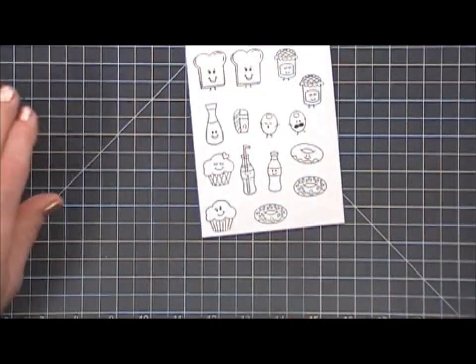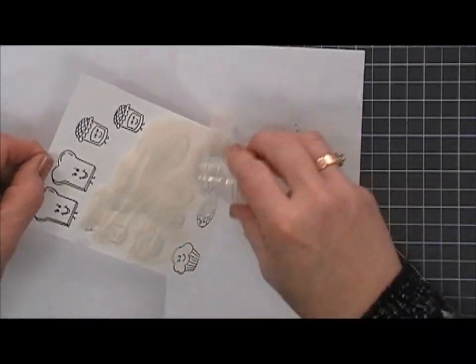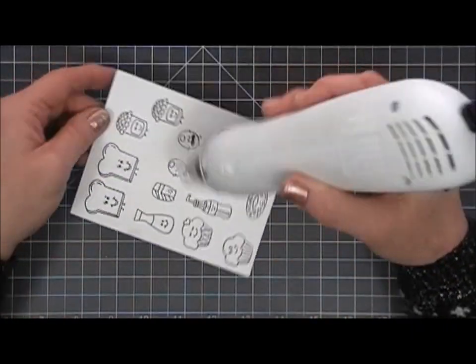I'm stamping all the images with my VersaFine ink, and then I am going to go over my images with my clear embossing powder and then I'm going to go ahead and melt that.